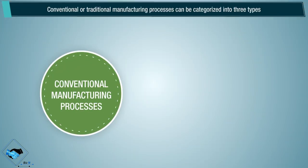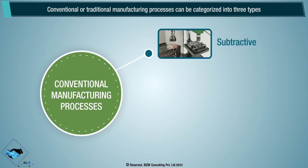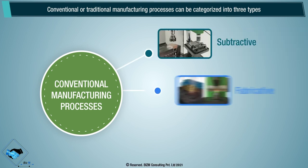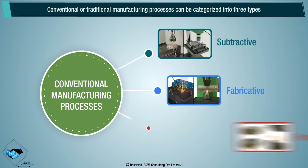Conventional or traditional manufacturing processes can be categorized into three types: subtractive, fabricative, and formative.